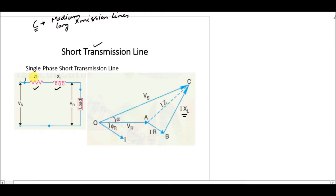Starting from a single-phase short transmission line, we have VS and VR, both line-to-neutral. The line is represented by its resistance and inductive reactance values, and current I flows from the sending end to the receiving end. If we represent this diagram in terms of phasors, we take VR as the reference value at zero degrees.